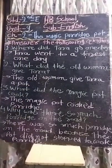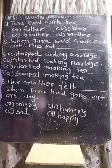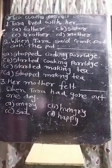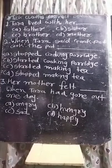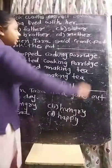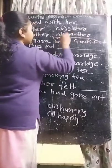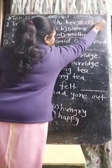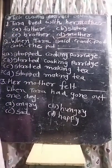Now we will see the correct option. First one: Tara lived with her — (Tara kis ke saath rahiti thi?) — her father, her sister, her brother, or her mother? Answer: Mother. Tara lived with her mother.